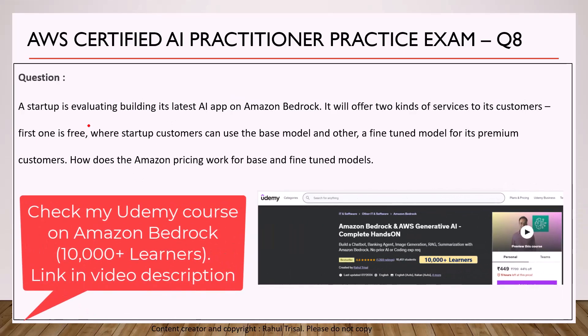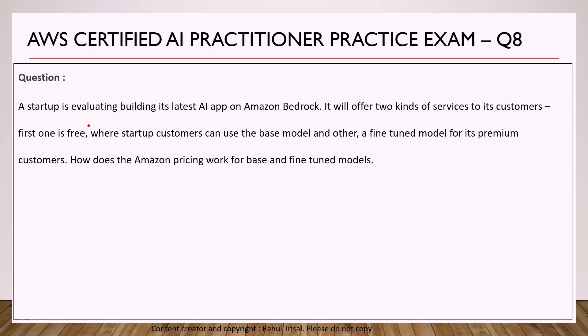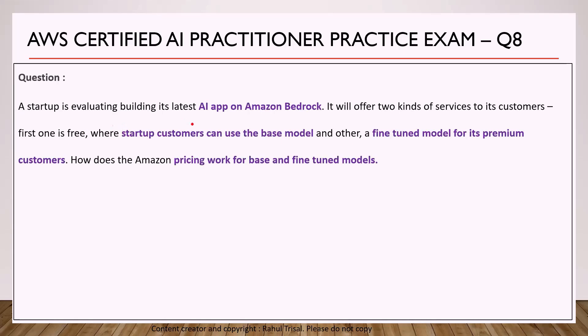Now let's take a look at the eighth question. A startup is evaluating building its latest AI app on Amazon Bedrock. It will offer two kinds of services to its customers: a free tier where startup customers can use the base model, and a fine-tuned model for premium customers. How does Amazon Bedrock pricing work for base and fine-tuned models? The keywords are two pricing models — one for the base model and one for fine-tuned models.